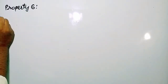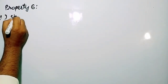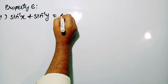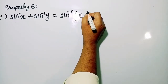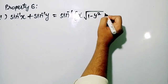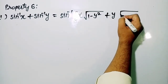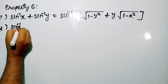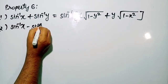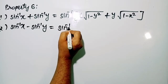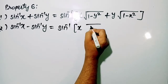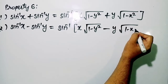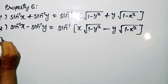Properties number 6 of inverse trigonometric functions. The first one is: sin⁻¹ x + sin⁻¹ y = sin⁻¹(x√(1−y²) + y√(1−x²)). Second, sin⁻¹ x − sin⁻¹ y = sin⁻¹(x√(1−y²) − y√(1−x²)).